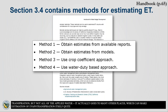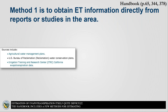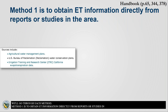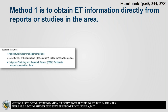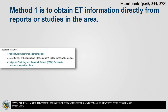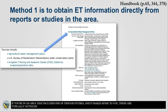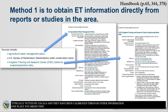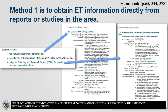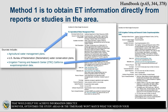The handbook includes a few methods for estimating ET. Method one is to obtain ET information directly from reports or studies in the area. There are many studies done in California that include estimations of ET, and if you're in an area that includes one of those studies, it makes sense to use what's been developed, as those are typically vetted by locals and calibrated through other information. One place you might find those is in existing agricultural water management plans, many of which have ET information. However, often the study areas or the time frame won't match what you need in your water budget, in which case you won't be able to use that information.